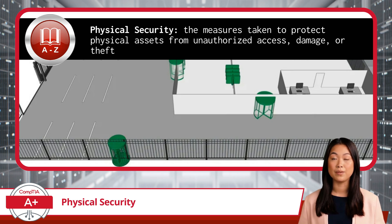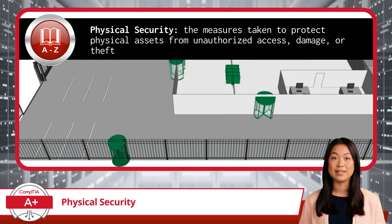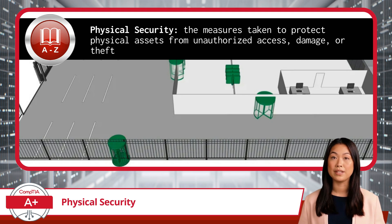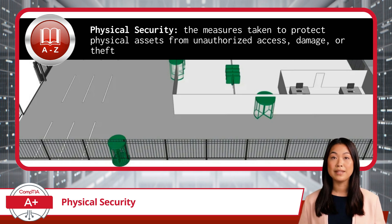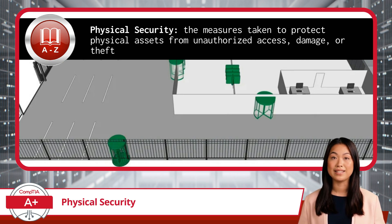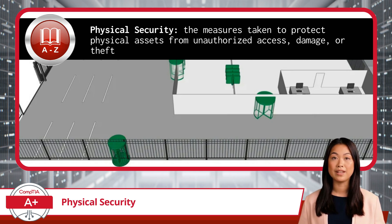In this video segment, we're focusing on physical security, because no matter how tight your network defenses are, they won't help much if someone can just walk in and take what they want. Physical security refers to the measures taken to protect the physical assets of an organization, such as buildings, equipment, and people, from unauthorized access, damage, or theft. Think of it as the layer of protection that guards the actual physical location where your data and IT systems reside. Without it, even the most sophisticated cybersecurity strategies can be easily compromised.